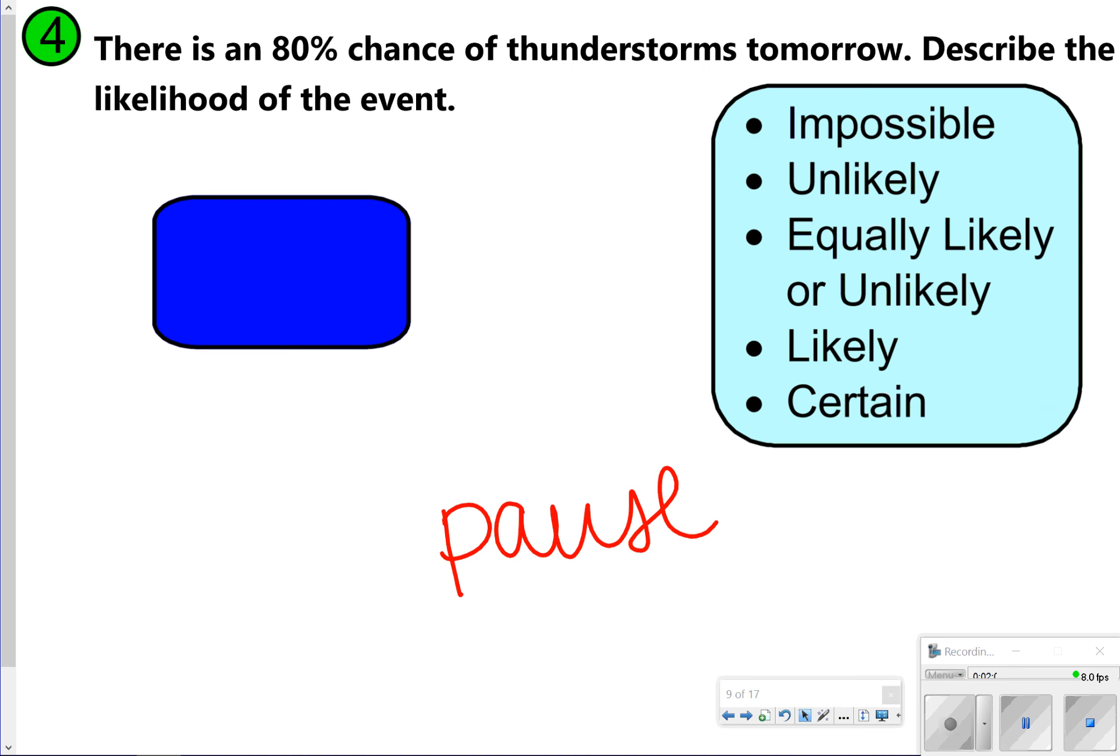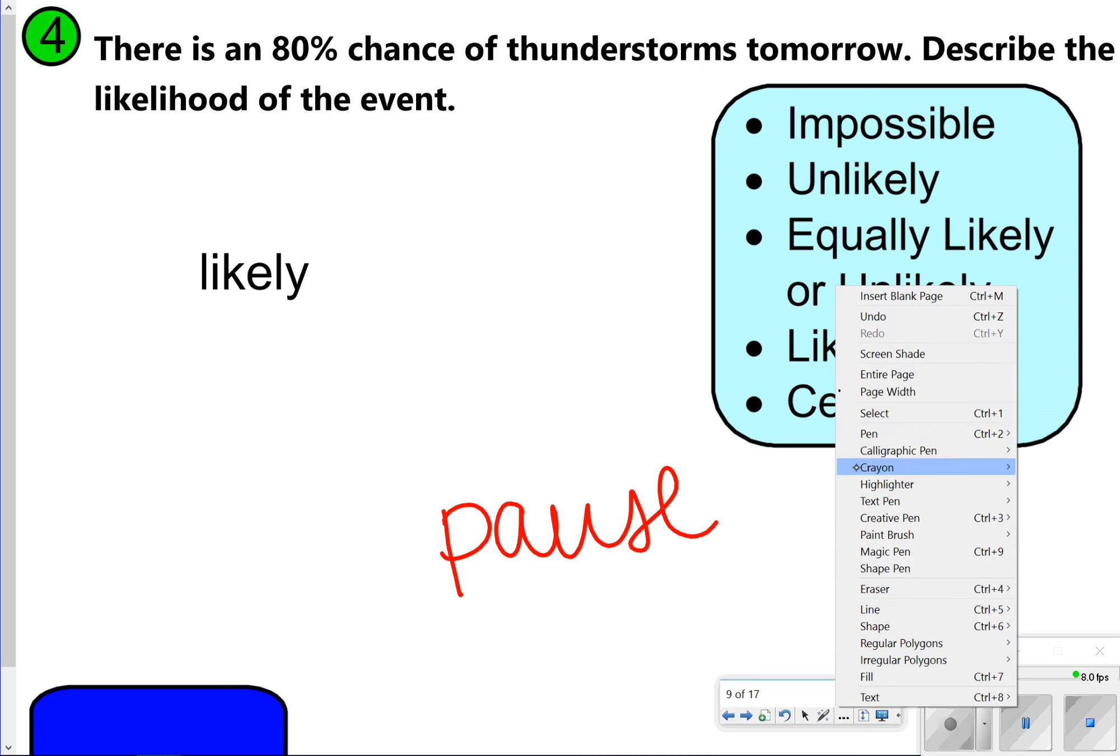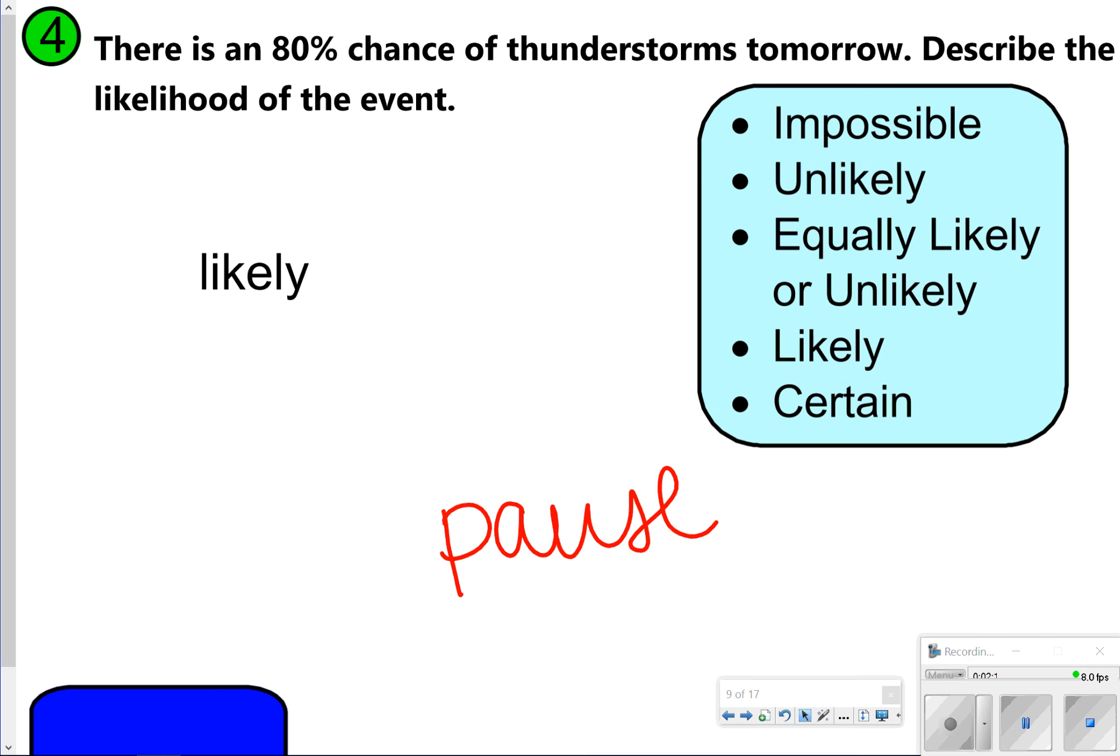Okay, for number four, this one is going to be likely. 80% is really close to 75% and so that is why we would be choosing likely in this case.